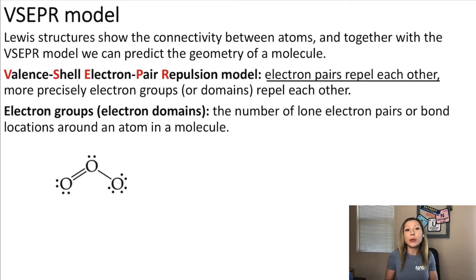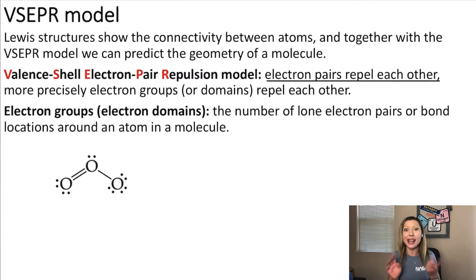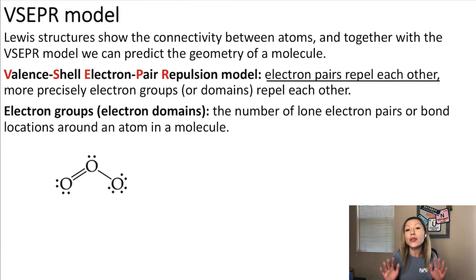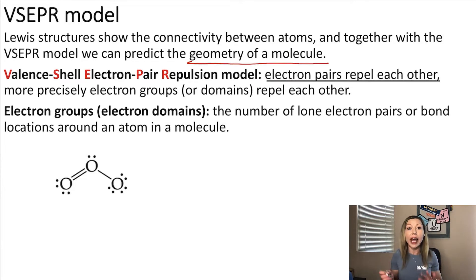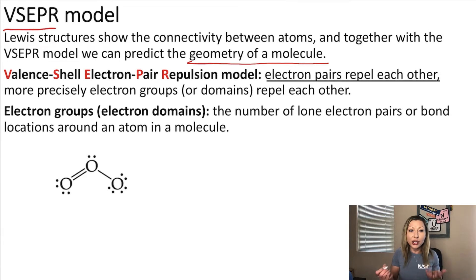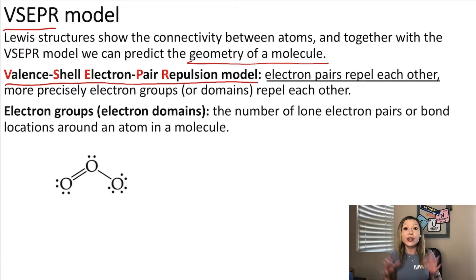Hello guys, let's talk about molecular shapes. This is one of my favorite topics because when I think about the VSEPR model, I instantly think about balloons and marshmallows. You are going to see why. So when we draw Lewis structures, they help us figure out the connectivity between different atoms. But we need to use a different theory to actually figure out the geometry of a molecule. For this, we are going to use the so-called VSEPR model, which is abbreviated from valence shell electron pair repulsion model. This basically tells us that electron pairs repel each other.